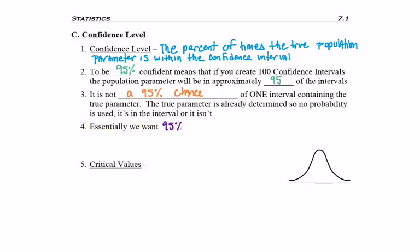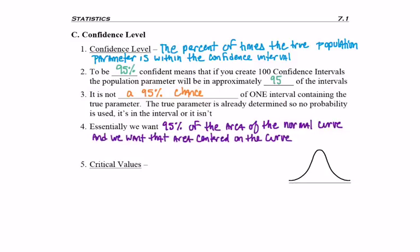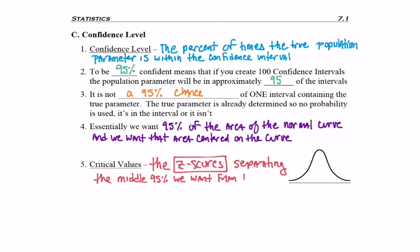Essentially we want 95% of the area of the normal curve, and we want that area centered on the curve. We talk about that using the concept of critical values. This is the z-scores, specifically z-scores separating the middle 95% we want from the 5% we don't want.